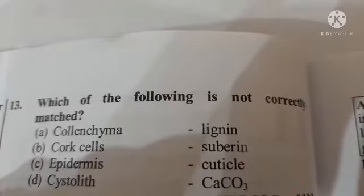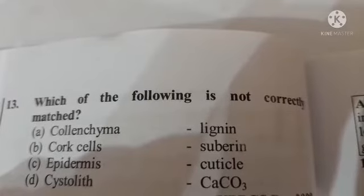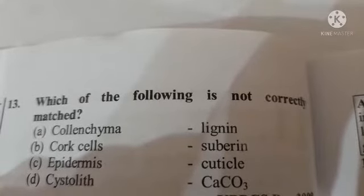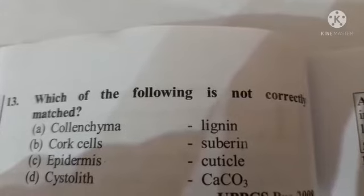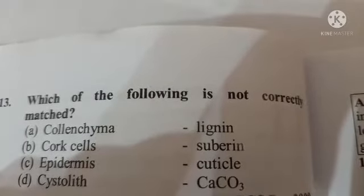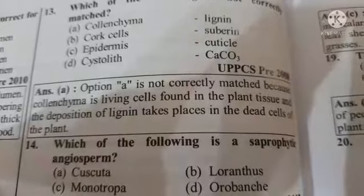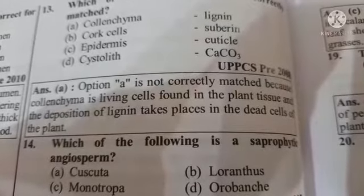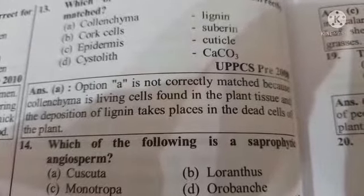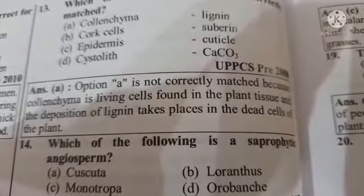Next question: which of the following is not correctly matched? Option A colenchyma-lignin, option B cork cell-suberin, option C epidermis-cuticle, option D cystolith-calcium carbonate. The answer is option A, colenchyma-lignin, as colenchyma does not contain lignin — it is not correctly matched. Next question: which of the following is a saprophytic angiosperm? Option A Cuscuta, option B Loranthus, option C Monotropa, option D Orobanche. The answer is option C, Monotropa.